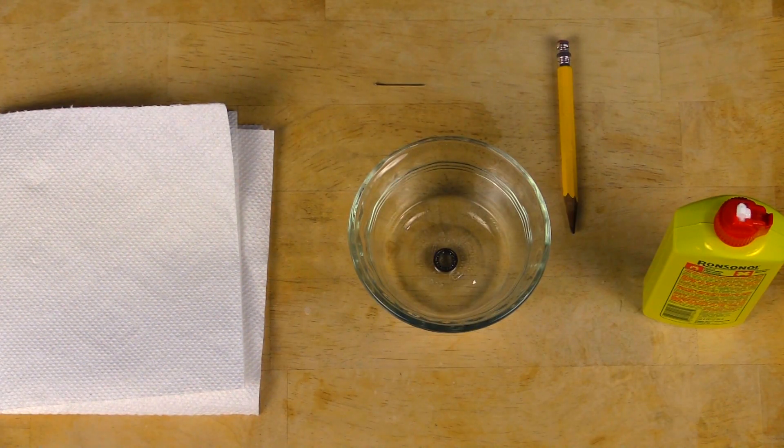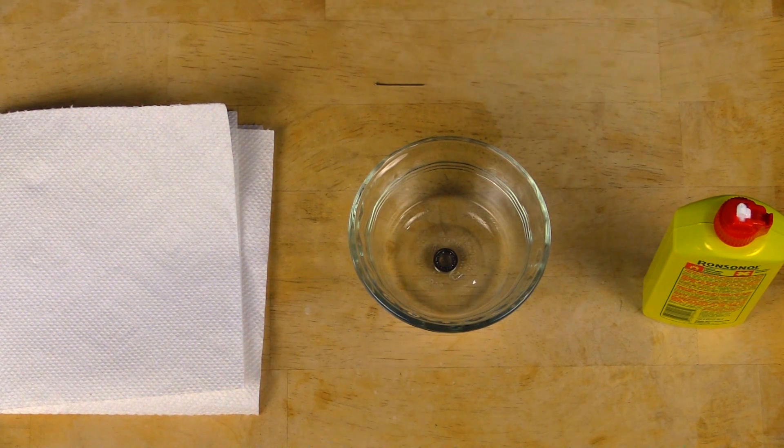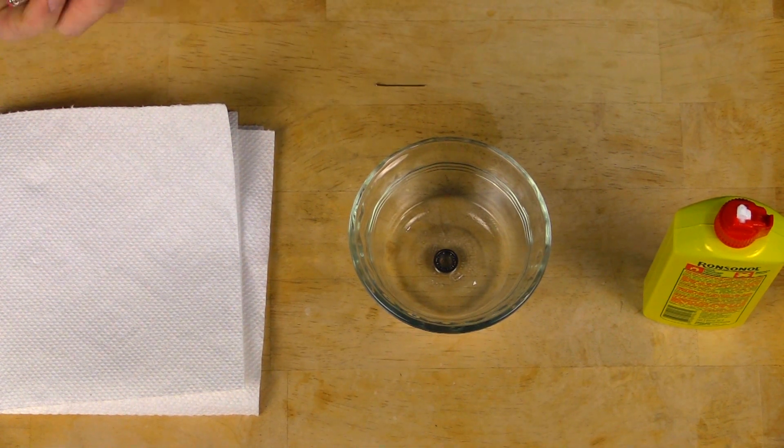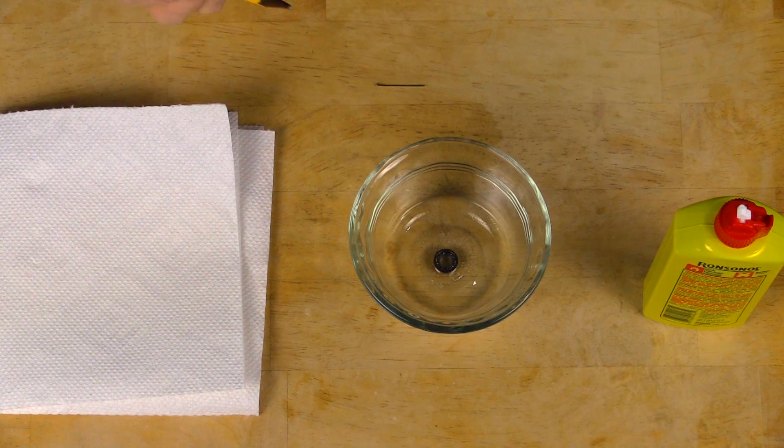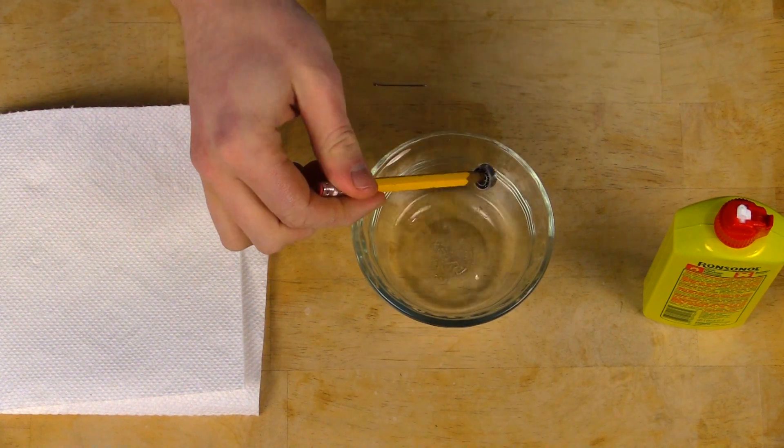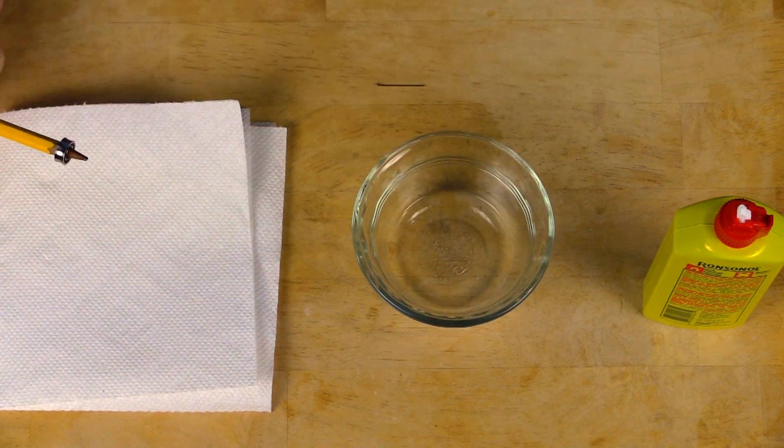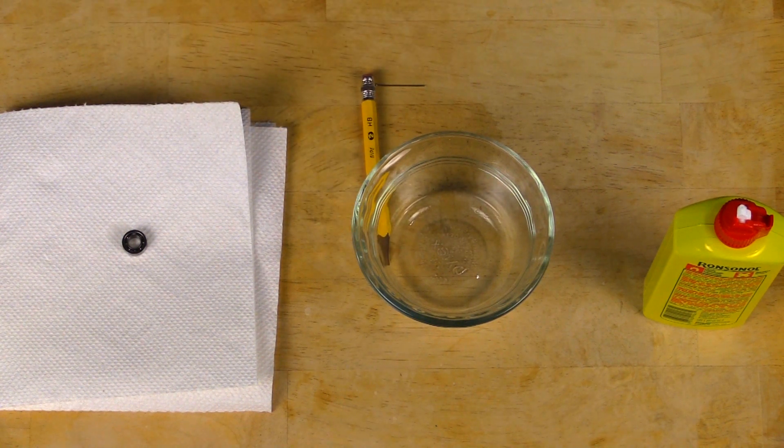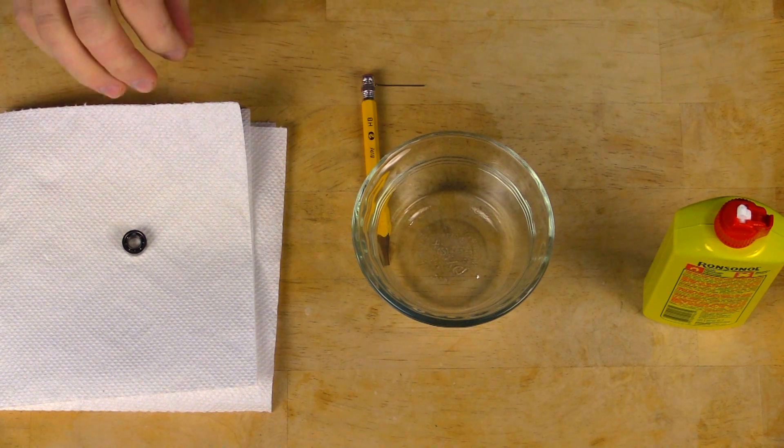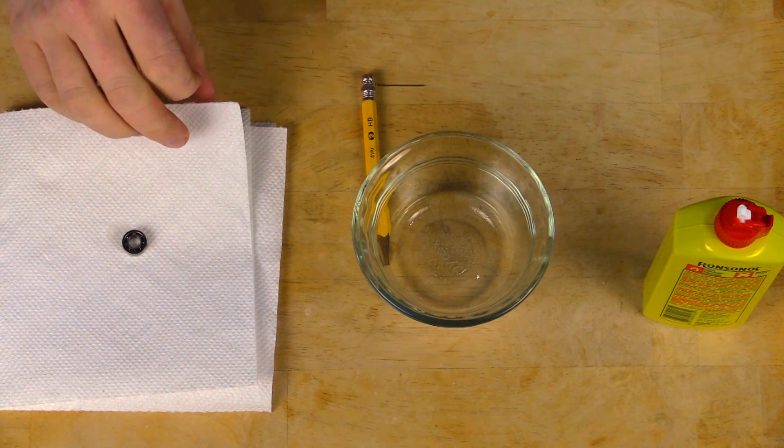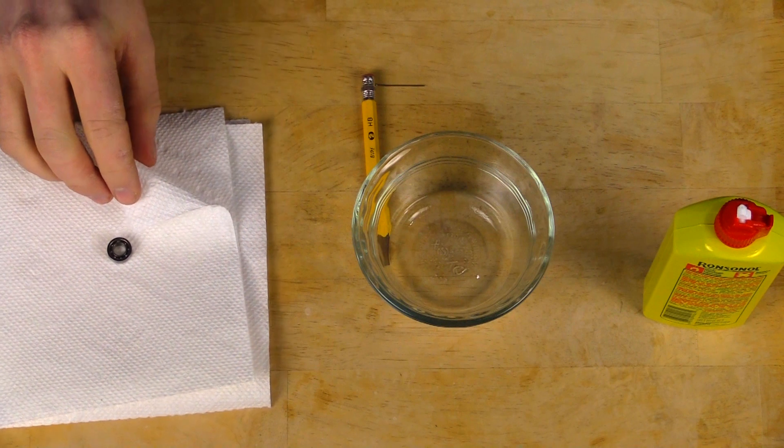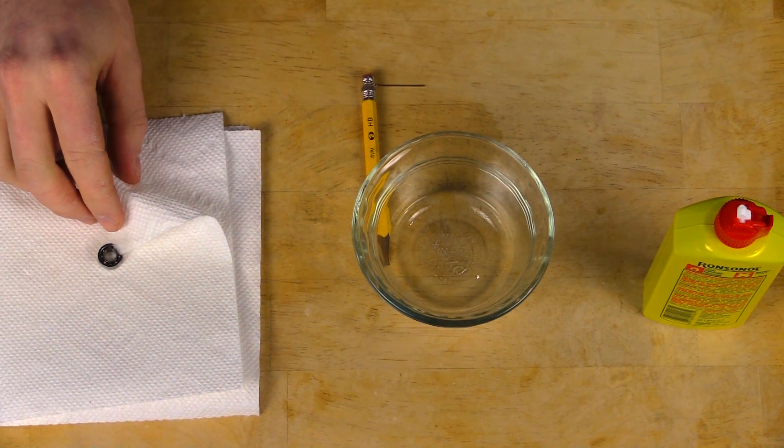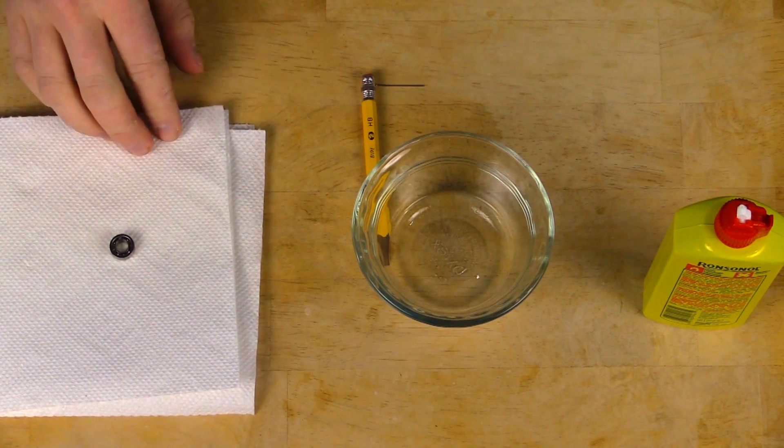All right we're back through the magic of editing and our bearing has been sitting in the solvent long enough to dissolve everything in there. So you're gonna want to take your pencil and just take the bearing out of the lighter fluid and then put it on the paper towel and let it sit there for about 10 minutes to let it dry. You really want to make sure it's fully dry because some solvents can damage plastic. If you want to speed the process up a little bit you can simply take the corner of the paper towel and work it in the bearing and that'll absorb some of the solvent out of the bearing.